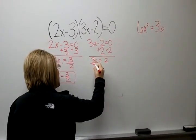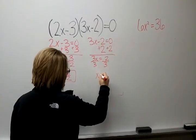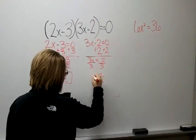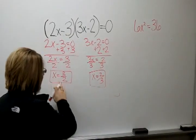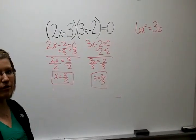So we're going to divide by 3. So we have x equals 2 thirds. So our final answer here is x equals 3 over 2 and x equals 2 over 3.